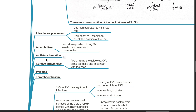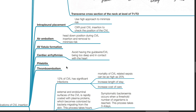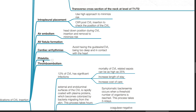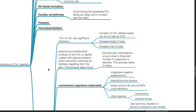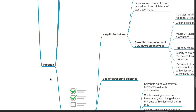Arteriovenous fistula formation and cardiac arrhythmias are also possible complications. Avoid having the guide wire or CVL too deep and in contact with the heart. Use continuous cardiac monitoring. Other complications include phlebitis, thromboembolism, and infection.